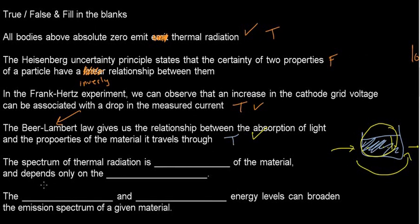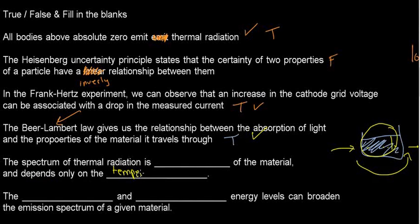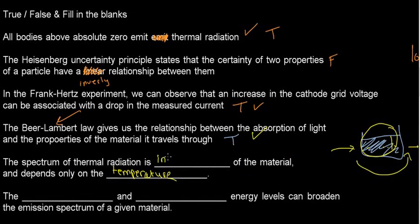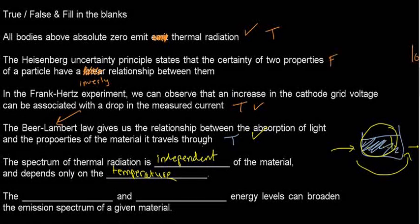Fill in the blank: the spectrum of thermal radiation is something of the material and depends only on something. Since thermal radiation depends on temperature alone, the spectrum of thermal radiation would be independent of the material and depends only on the temperature.